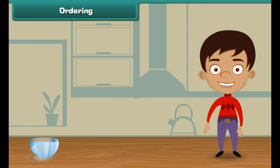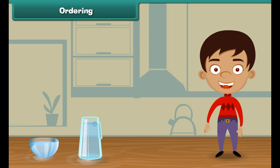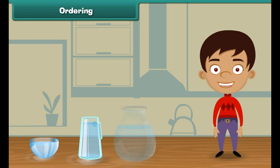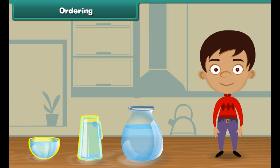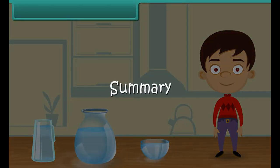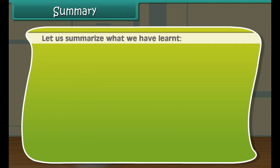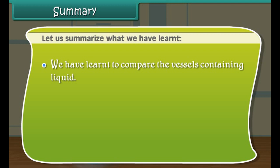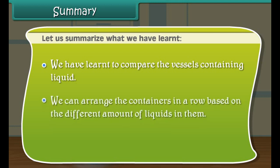Friends, we have three different vessels. Which vessel holds the least water? Yes, you are right. The bowl holds the least water. A jar holds more water than the bowl, and the pot holds more water than the bowl and the jar. Let us now arrange these vessels in increasing order. Bowl comes first because it holds the least water. The next in the row is the jar as it holds more water than the bowl. At last, we place the pot because it holds more water than the bowl and the jar.